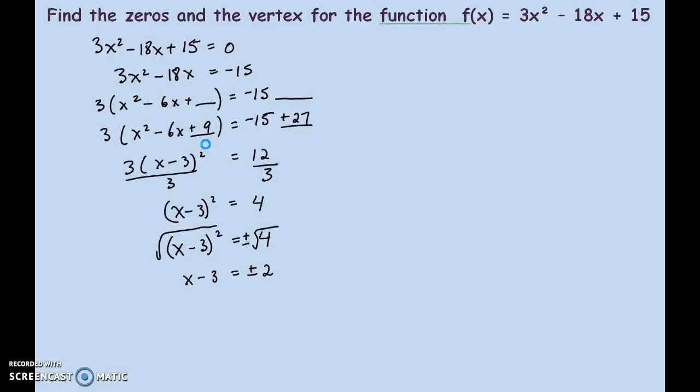There are two solutions we're looking for. So, I want to isolate the x. So, I'll bring the negative three to the other side. Plus or minus two. My two solutions, three plus two or three minus two. The x-intercepts, that's where the two zeros are, can be written as ordered pairs, (5, 0) and (1, 0).